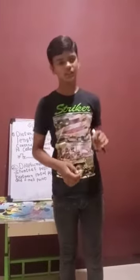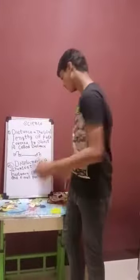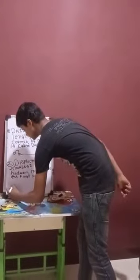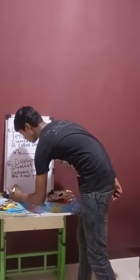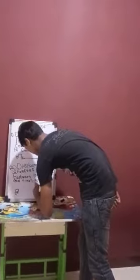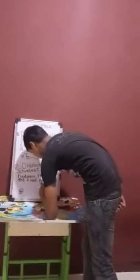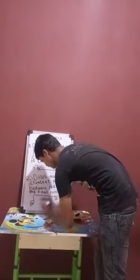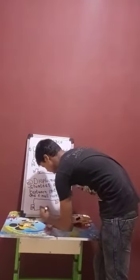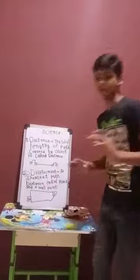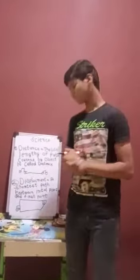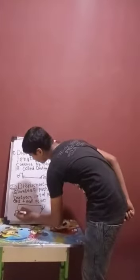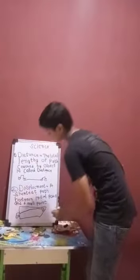Let us understand by one example. So this is your home and this is your school. You can go to school in this way and in this way also. But the shortest length of path between home and school is called displacement.